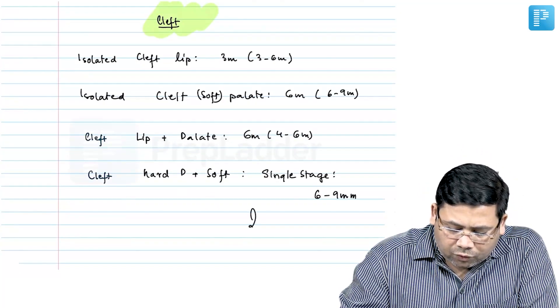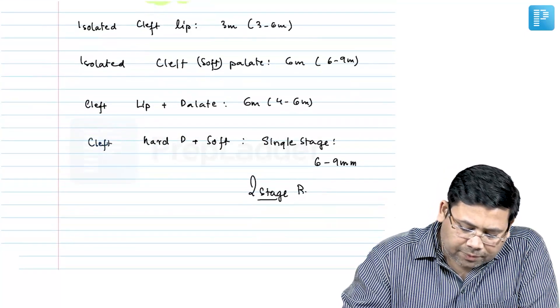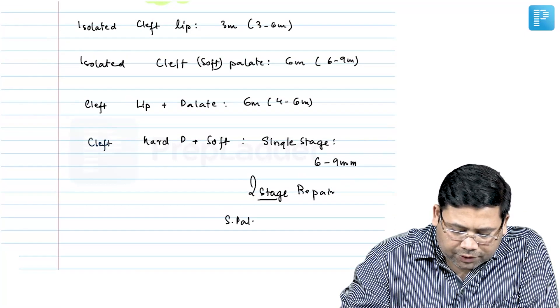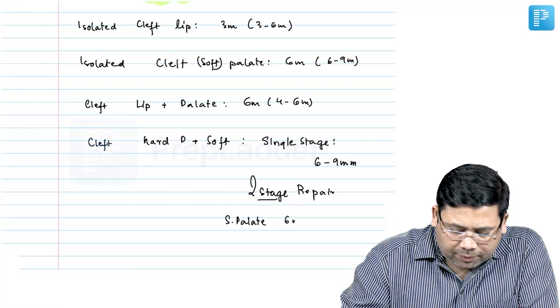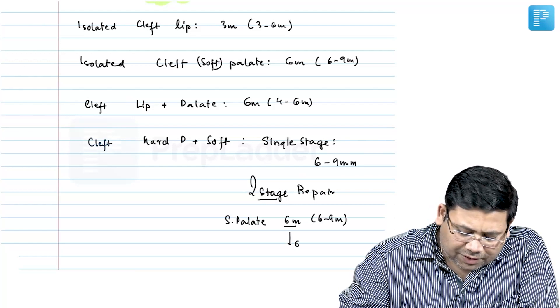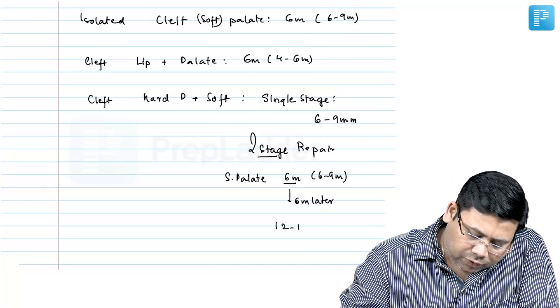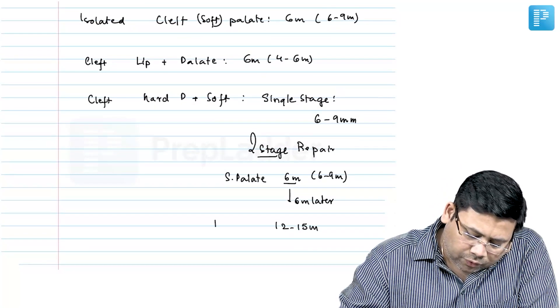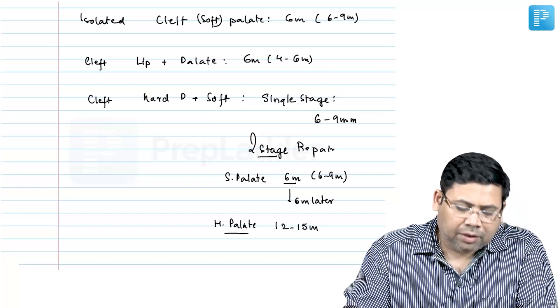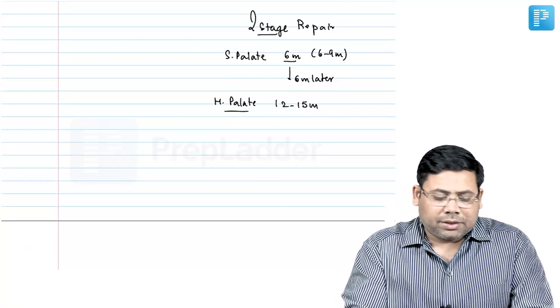And if you want to go for a two stage repair, this is very simple. In two stage repair, the soft palate shall be repaired at six months, the range is six to nine months. And six months later, 12 to 15 months, you can go for repair of hard palate. This is how the timing of cleft palate repair is seen.